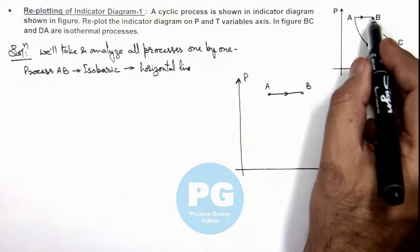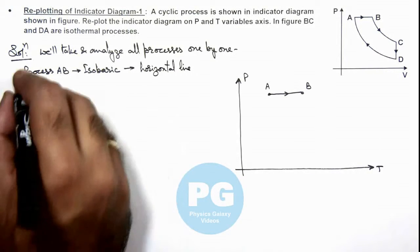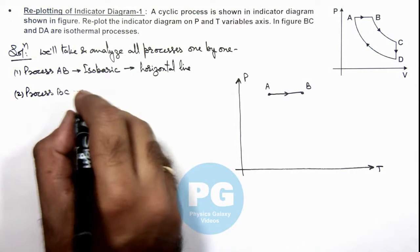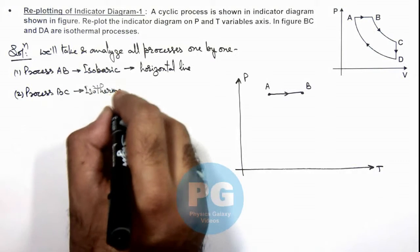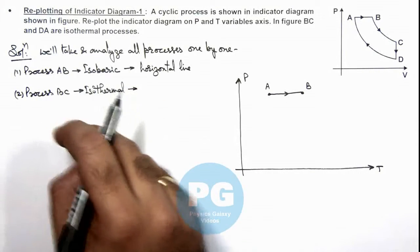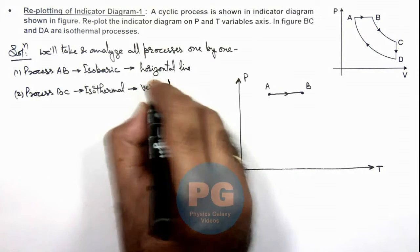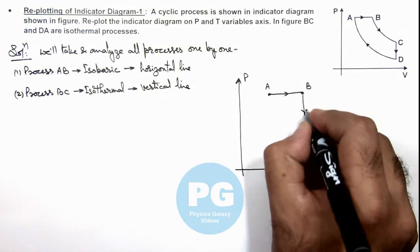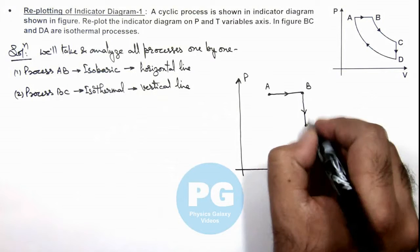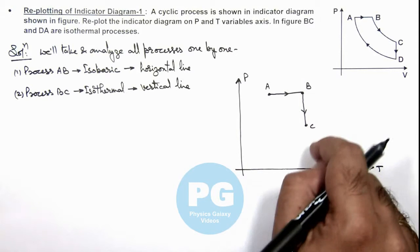If we talk about B to C, the second process is process BC, which is given to us as an isothermal process. In an isothermal process, temperature remains constant, so this will be a vertical line. This will be the process carried from B to C. For a vertical line, temperature remains constant on the PT axis, and this will be the isothermal process.